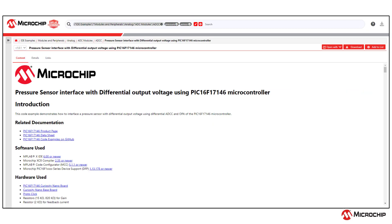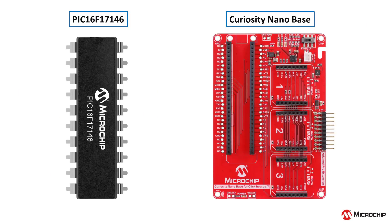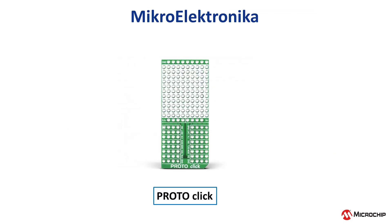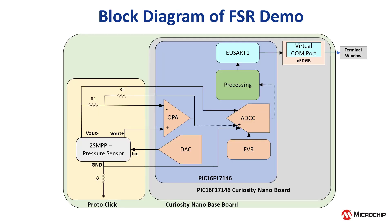Now that we've gone over the differential ADC and its modes, let us look at a pressure sensor demo that displays the capabilities of the differential ADC on a PIC16F17146. This demonstration uses the PIC16F17146 on a Curiosity Nano Development Board with a ProtoClick from MikroElektronika to interface with the pressure sensor. Shown on the screen is a high-level block diagram of how to interface a 2SMPP pressure sensor with a differential output voltage using a differential ADC and an op-amp found on the PIC16F17146 MCU.